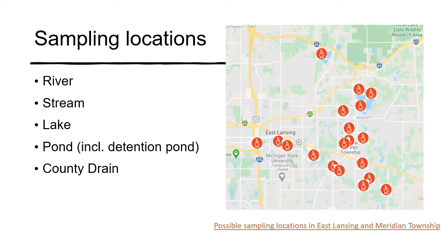Sampling locations can be rivers, streams, lakes, ponds, or county drains — basically any freshwater system. Possible sampling locations in East Lansing and Meridian Township are given with a link to an interactive Google map where you can click on locations to find them. I've tried to find some possible places within the vicinity of Michigan State where you could do your sampling.